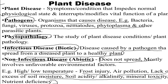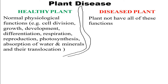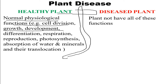Moving on, let's look at some points of difference between a healthy plant and a diseased plant. A healthy plant normally goes through normal physiological functions, which include cell division, growth, development, differentiation, respiration, reproduction, photosynthesis, absorption of water and minerals, and translocation.